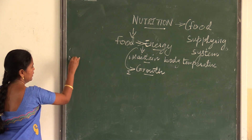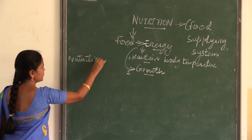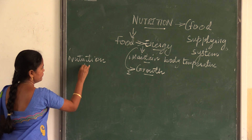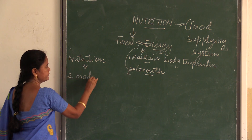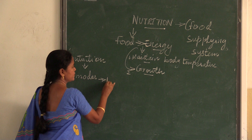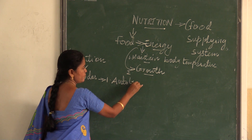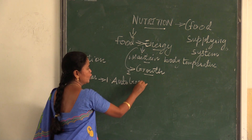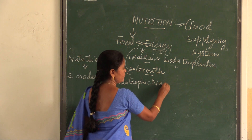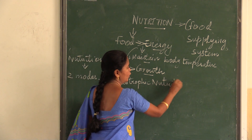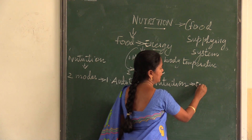Coming back to nutrition, in this topic we have 2 modes of nutrition. One is called autotrophic nutrition. An example of autotrophic nutrition is plants.